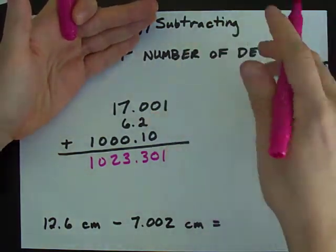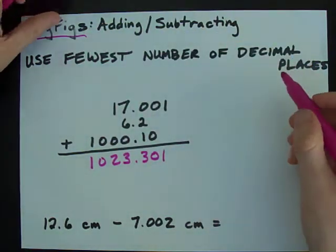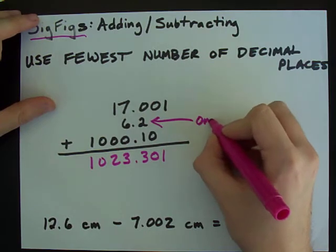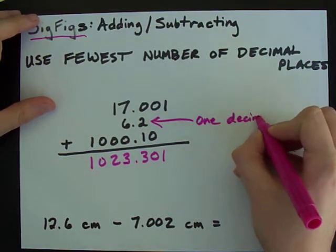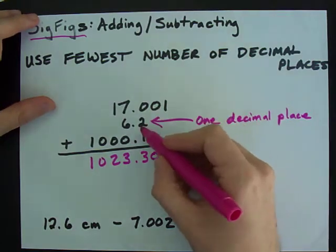But that's not your final answer when you're talking about significant figures, because one of your numbers only had one decimal place after the decimal. This one had 3, this one had 2, this one had 1.